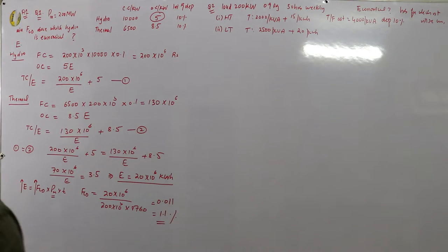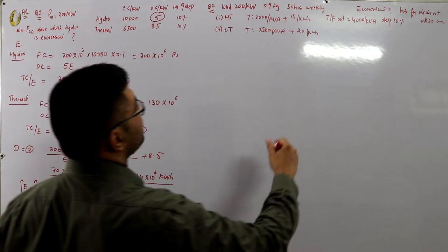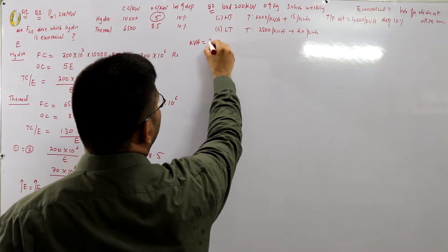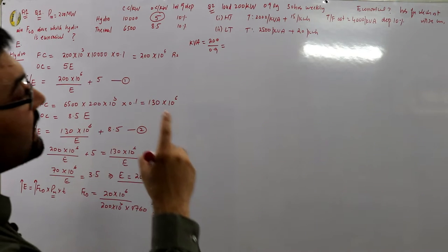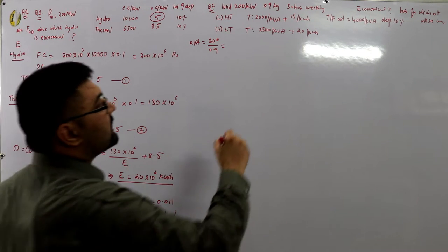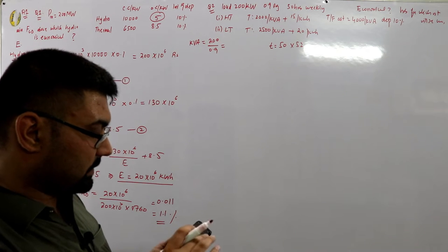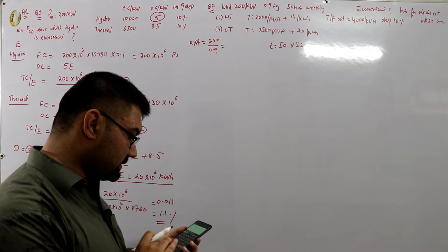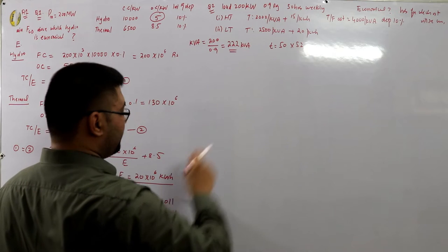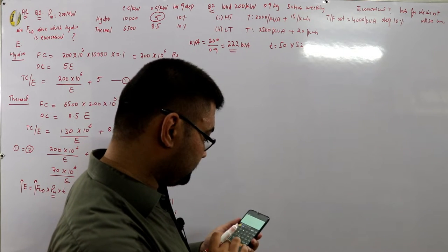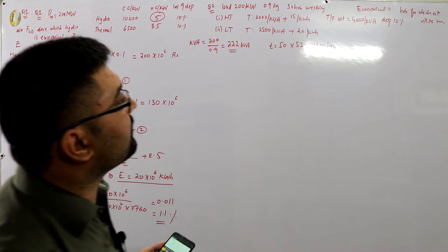First, we need to find the KVAs: KVA = kilowatt / power factor = 200 / 0.9 = 222 KVA. The time is 50 hours per week, so yearly hours = 50 × 52 = 2,600 hours per year. These are the hours of operation for which we'll calculate costs.